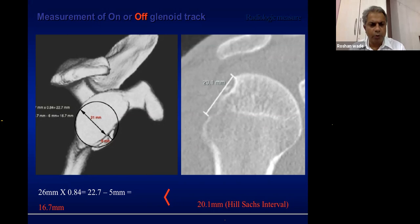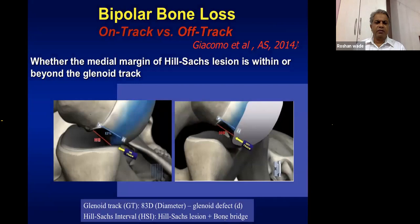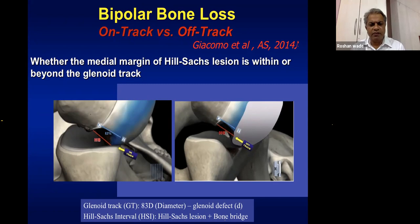Off-track is a very important lesion associated with recurrent dislocation rates as high as 70-80% even after good arthroscopic repair. Giacomo from Italy suggested a formula: 83% of the glenoid diameter minus the defect gives the glenoid track. The Hill-Sachs interval — from the infraspinatus footprint to the medial border of the Hill-Sachs lesion — is the bone bridge. If glenoid loss is significant, using this formula predicts a high recurrence rate.